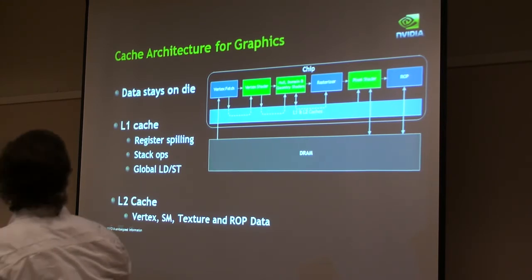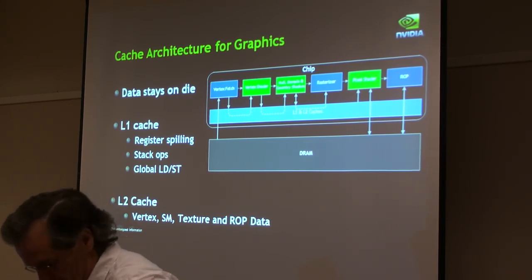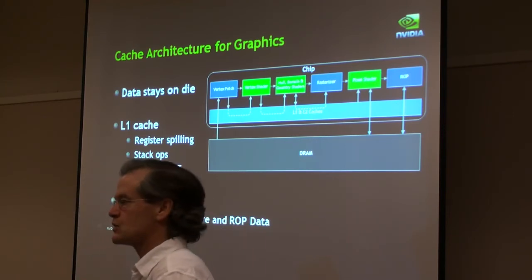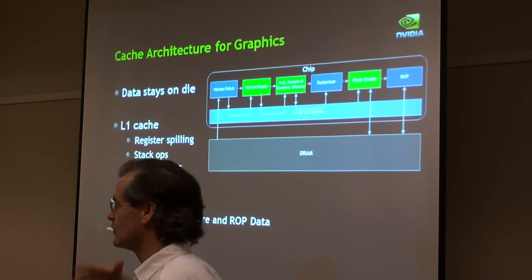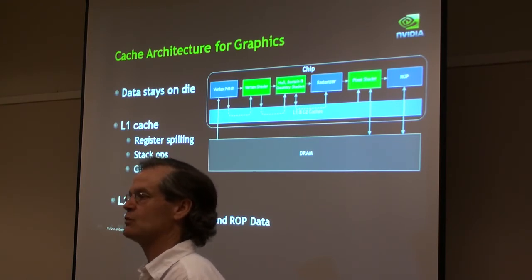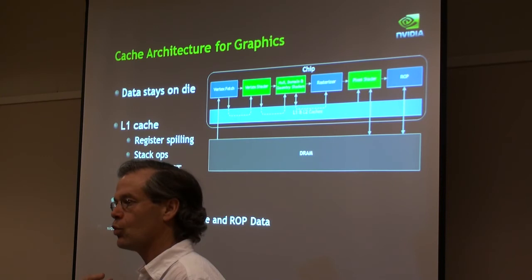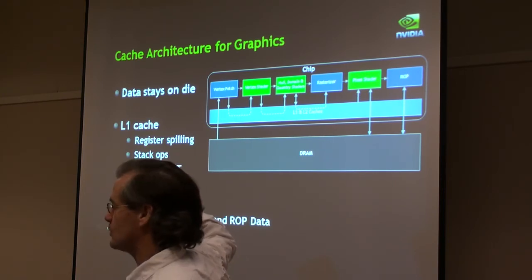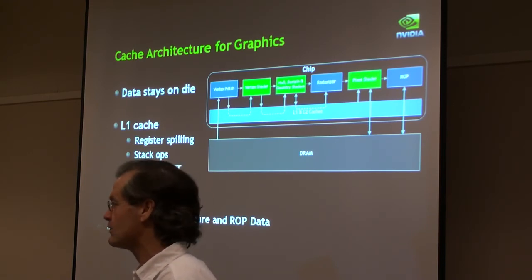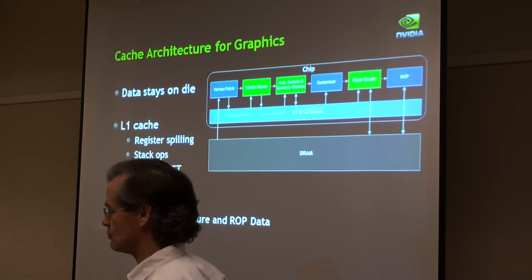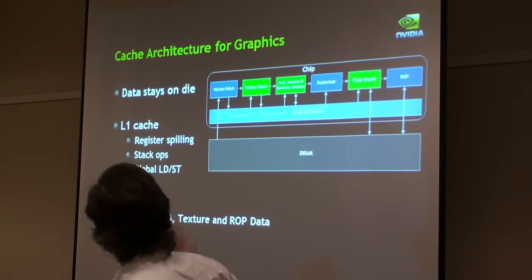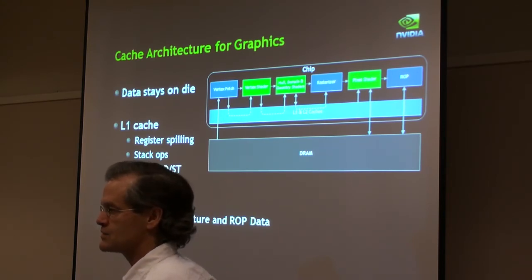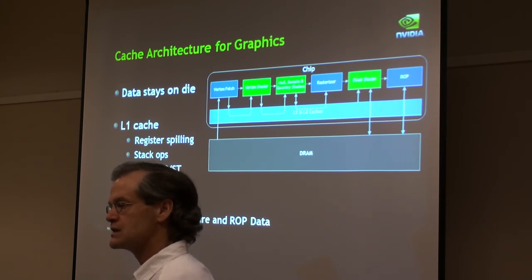One other facet that might not be completely obvious is that keeping data on die is also a scheduling problem. We're running vertex threads, hull shader threads, and all different kinds of threads on die. At any given moment, you have to decide which threads to actually execute in a way that doesn't cause you to generate too much data and push out into memory. You have to schedule things very carefully to guarantee the whole engine runs efficiently. At any given moment you've got conceivably tens of thousands of threads running of different types, and you just have to decide which ones to let run.